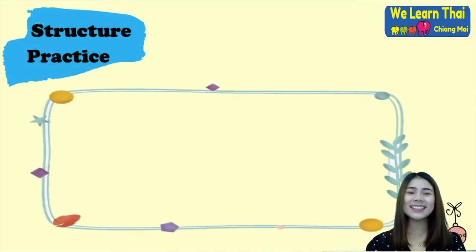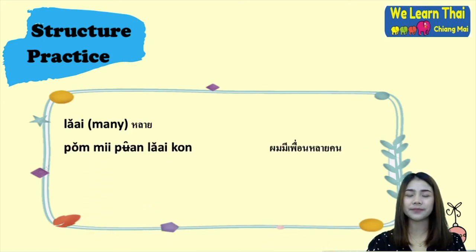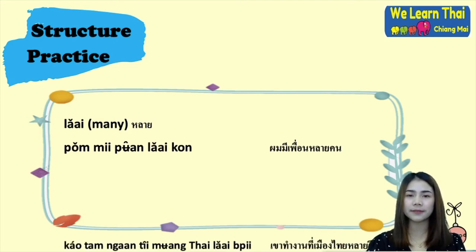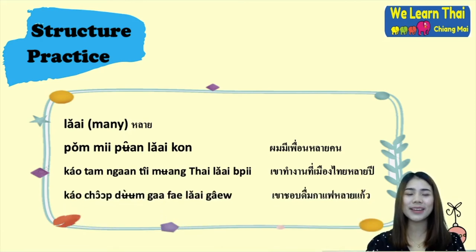Next, let's do some structure practice. The first word is หลาย (lai), meaning 'many.' For example: ผมมีเพื่อนหลายคน — 'I have many friends.' เขาทำงานที่เมืองไทยหลายปี — 'He/she works in Thailand for many years.' เขาชอบดื่มกาแฟหลายแก้ว — 'He/she likes to drink many cups of coffee.'